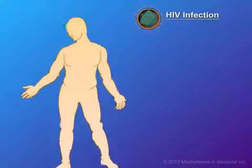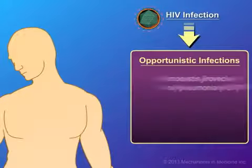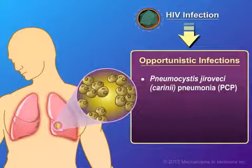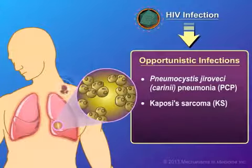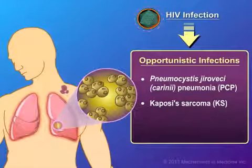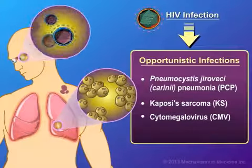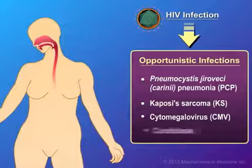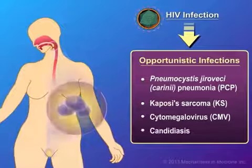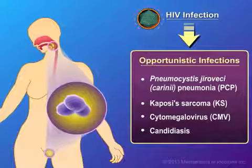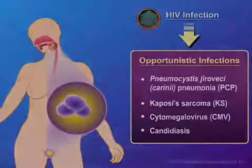The most common opportunistic infections are pneumocystis pneumonia, a lung infection; Kaposi's sarcoma, a skin cancer; cytomegalovirus, a viral infection that usually affects the eyes; and Candida, a fungal infection that can cause oral thrush, a white film in the mouth, or infections in the throat or vagina.